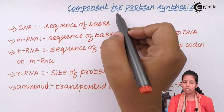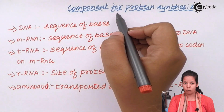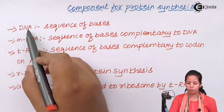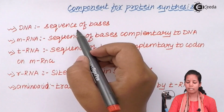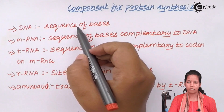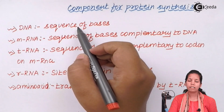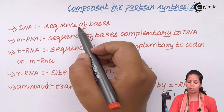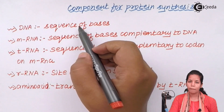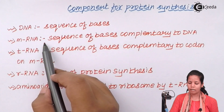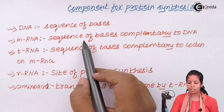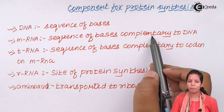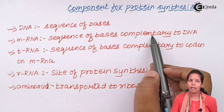The components for protein synthesis include: first, deoxyribose nucleic acid — the sequence of bases — which is the genetic information-containing molecule, DNA. Messenger RNA is nothing but a sequence of bases that are complementary to DNA.